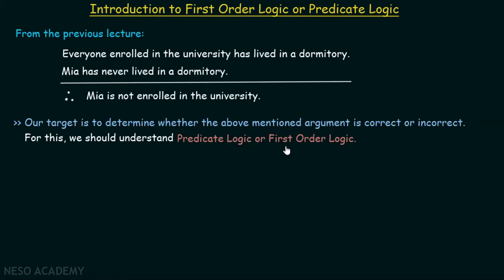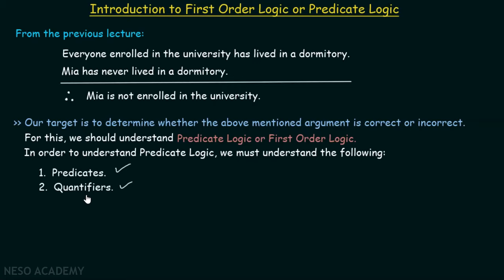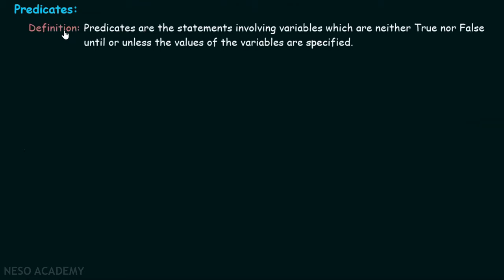We should understand predicate logic, or first order logic. And in order to understand predicate logic, we must understand the following: predicates and quantifiers. First, we will understand what predicates are, and then we will understand what quantifiers are. In this particular presentation, we will understand what predicates are, and in the subsequent presentations, we will understand what quantifiers are.